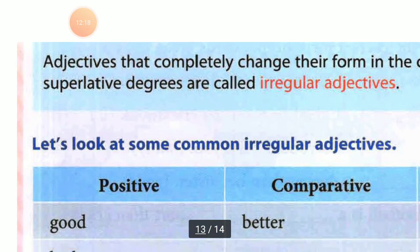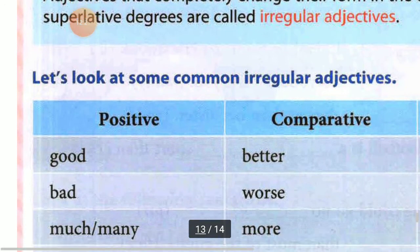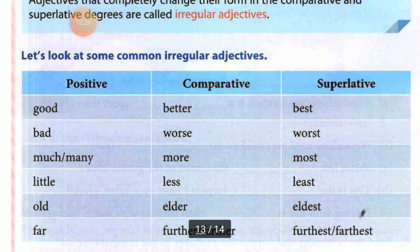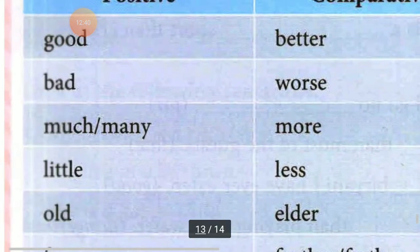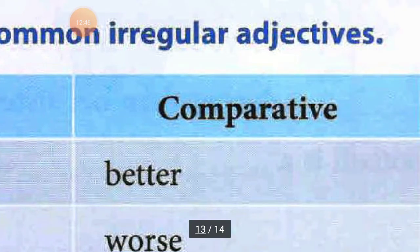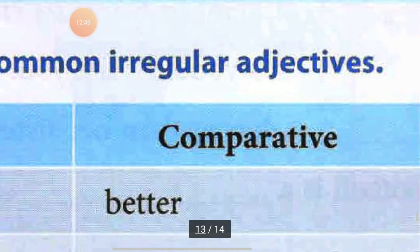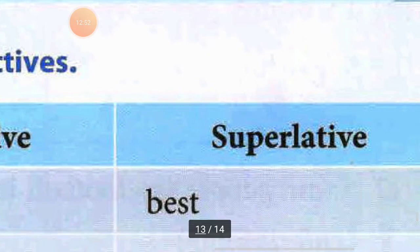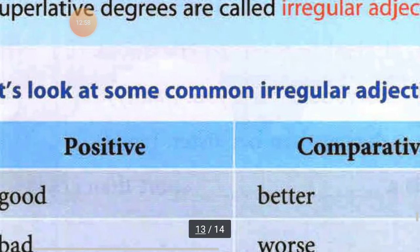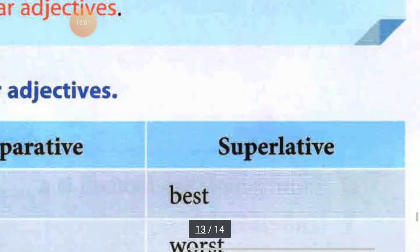Let's look at some common irregular adjectives in the table. The table has three columns: positive, comparative, and superlative. The first word is good — comparative: better, superlative: best. You have to learn it like this: good, better, best.